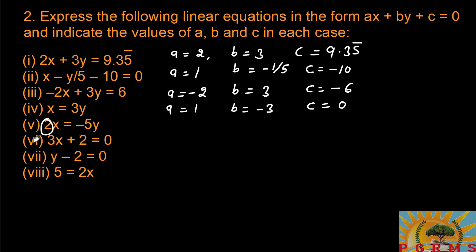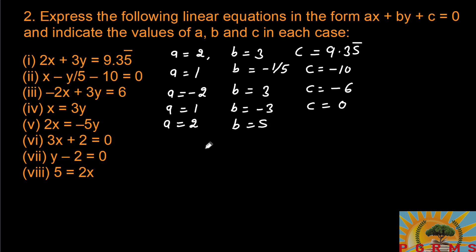Here x appears 2 times, so a equals 2. Bringing minus 5y from the right to the left side changes it from negative to positive, so b equals 5. There is no constant term here either, so c equals 0.